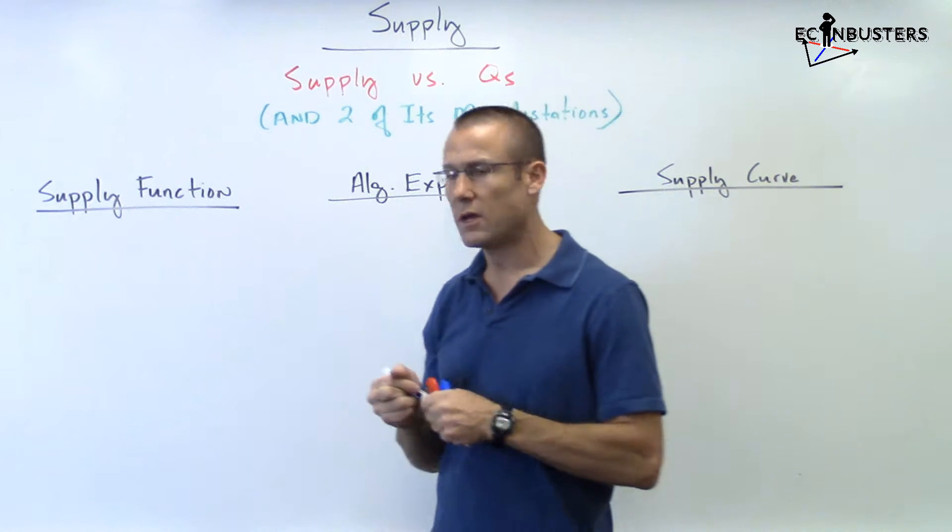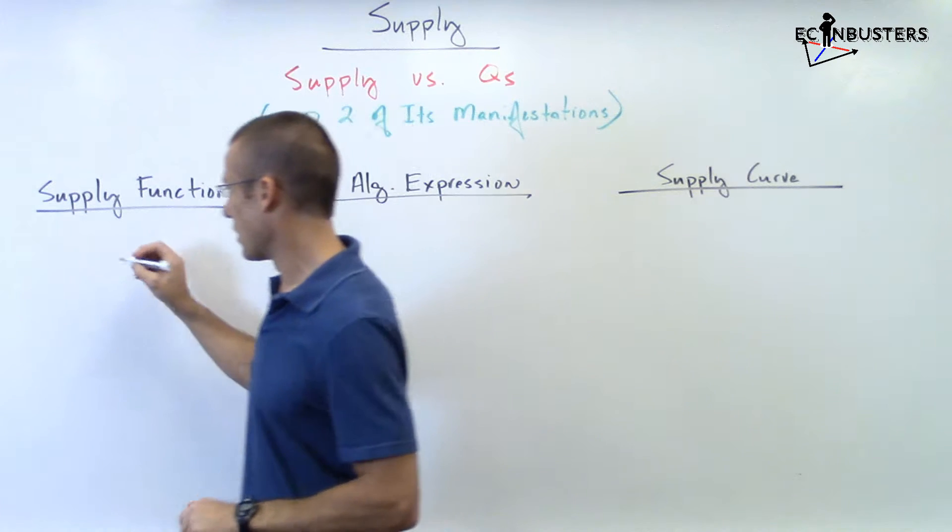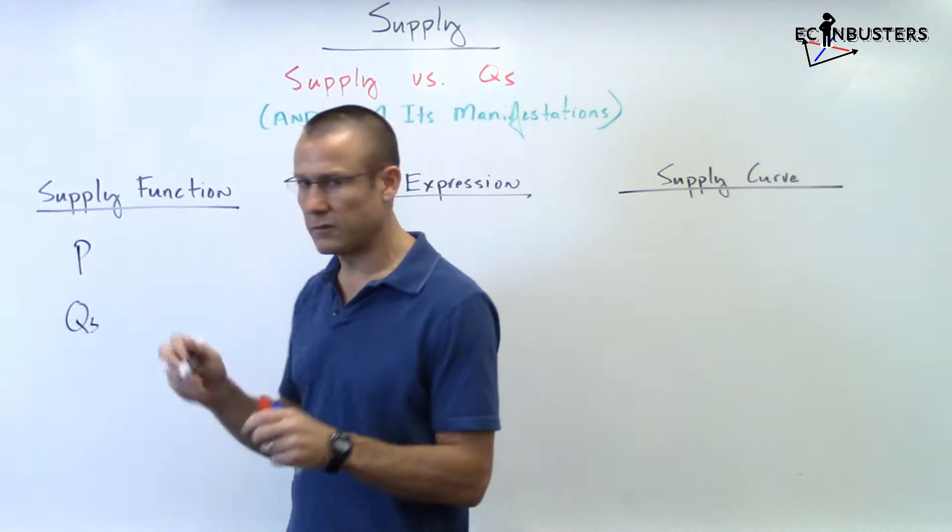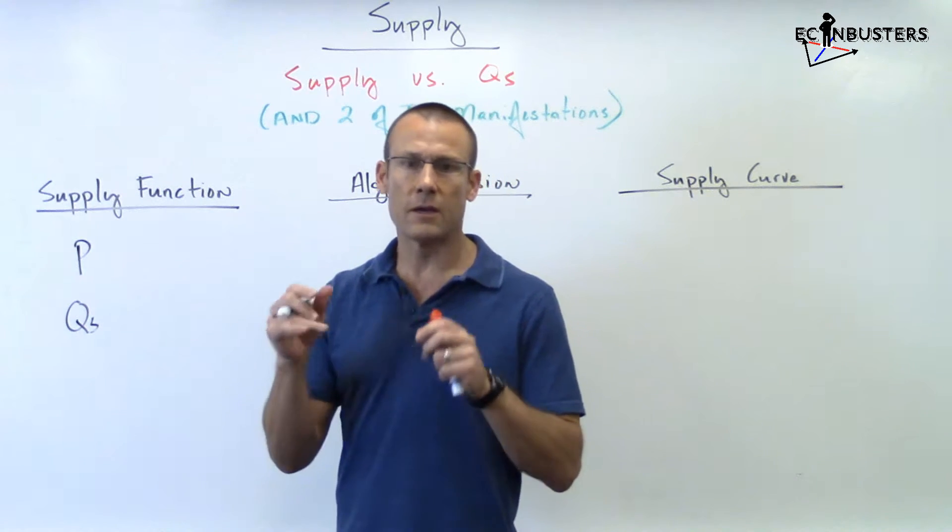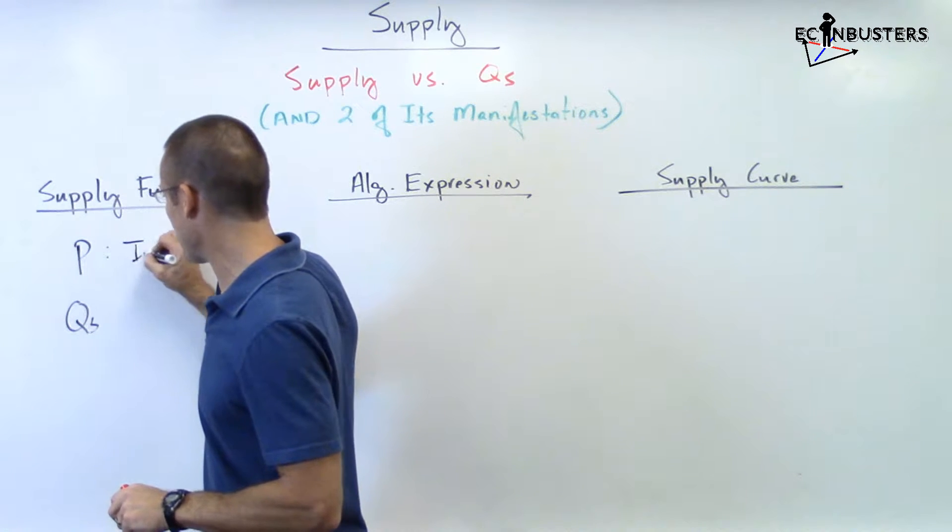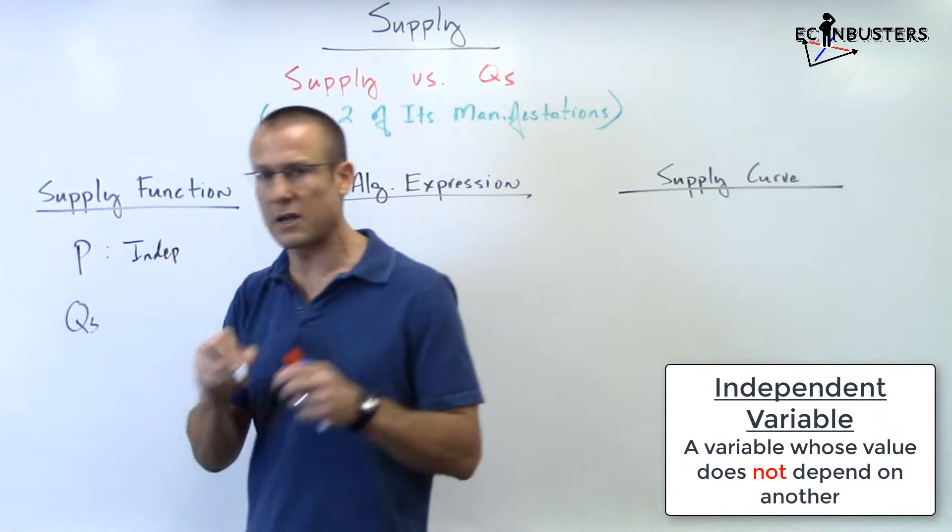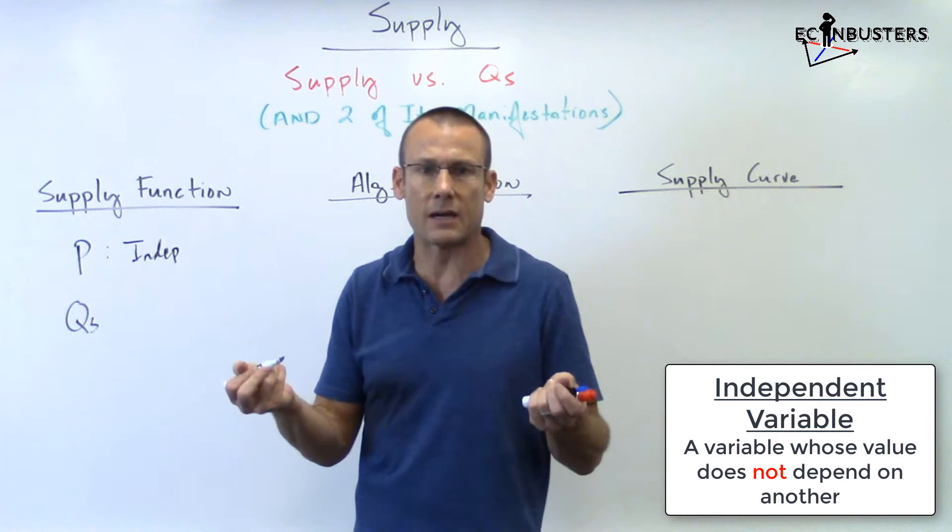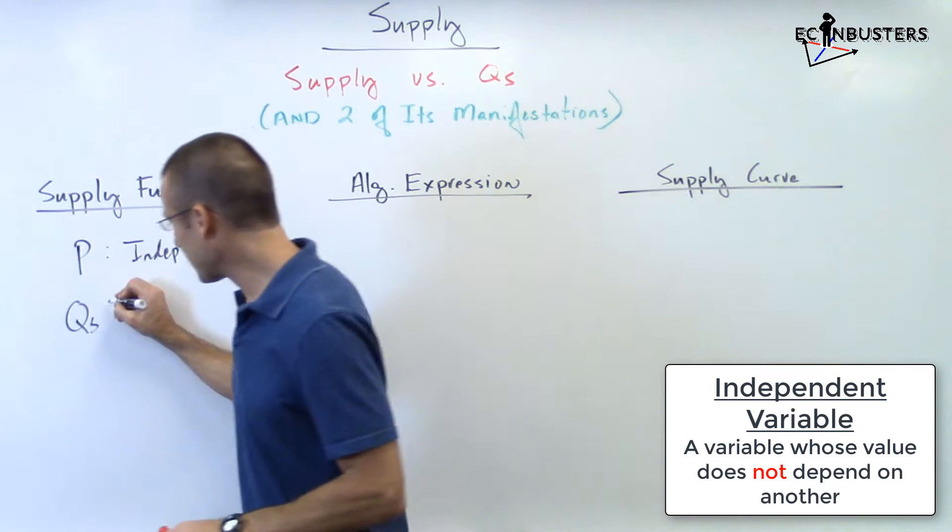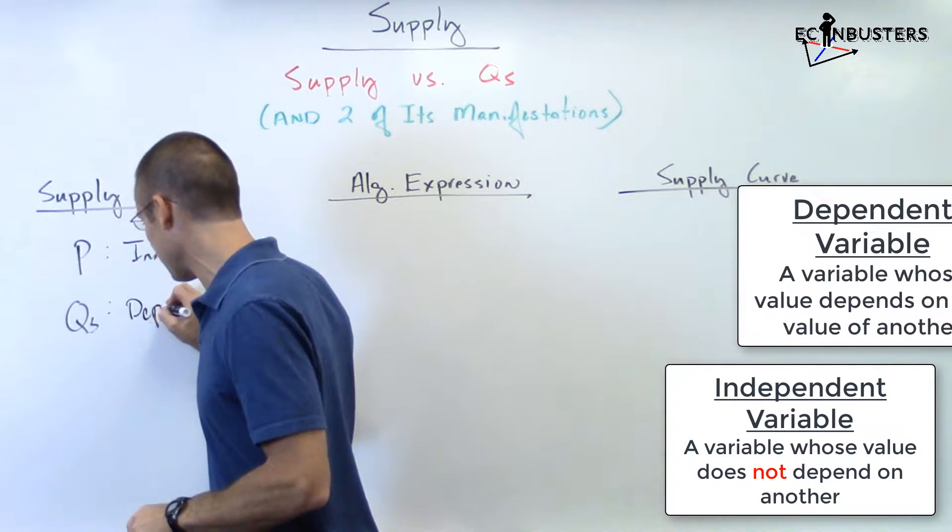two variables, and I think you might know what those variables are: price and quantity supplied. Now the interesting thing is - and don't be scared of this - but it is important to get this down: price is actually the independent variable. You're going to understand why we emphasize that on Econ Busters. It's important to get deep understanding: price is the independent variable, quantity supplied is the dependent variable.